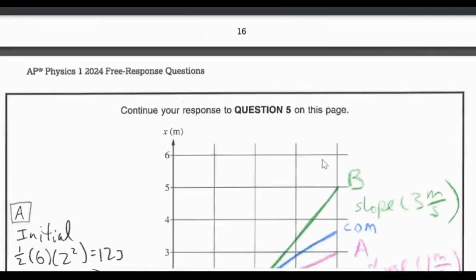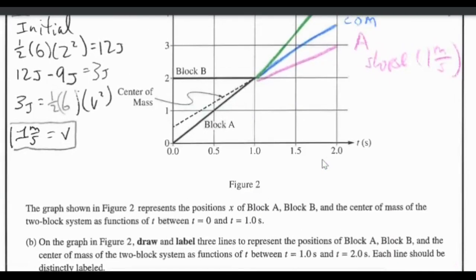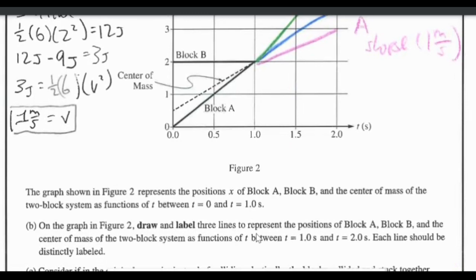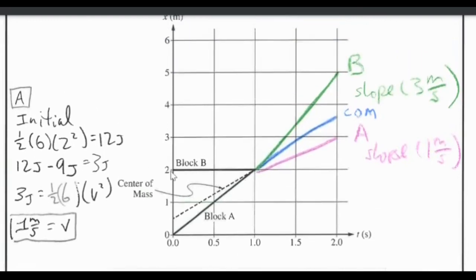Now going to the second part. There's a lot more going on here. So it says, draw and label the three lines to represent positions of block A, B, and the center of mass of the two-block system as functions of T between 1 and 2 seconds. Each line should be distinctly labeled. All right, so I'll tell you what I was thinking in each of these different parts.